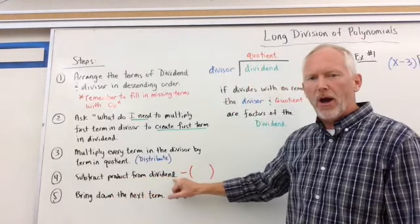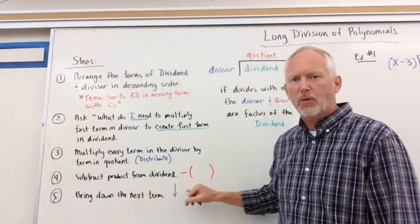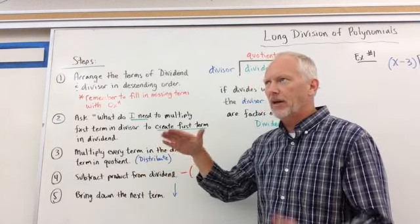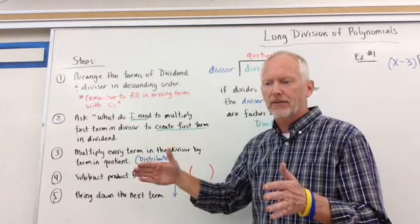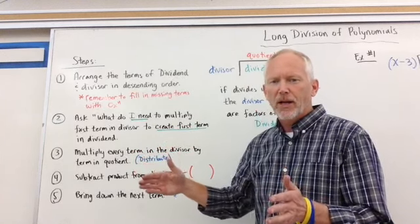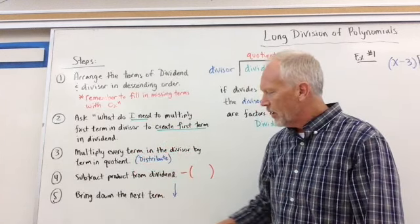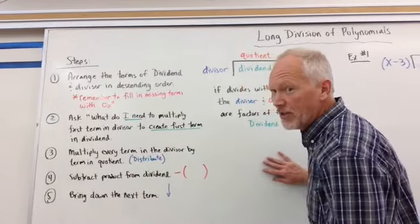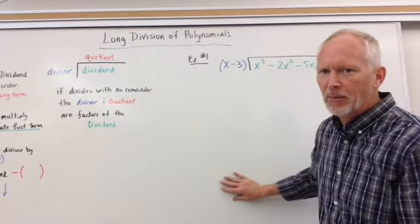Then we subtract the product. We go through and we subtract just like we normally would when we're dealing with a high-number dividend and we have a small divisor. Then we bring down the next term, and then the steps repeat. So let's see, what does this look like? Let's look at an example.